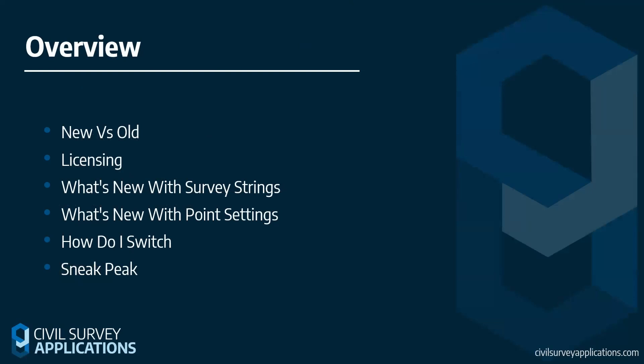A bit of housekeeping for today — a quick overview. We're going to do a rundown of old versus new software packages. I'll briefly touch on the new licensing added with Stringer V24, along with the brand new survey string settings form and point settings. We'll then go through an example showing how to bring your settings across — covering both CSV file formats and the SDB format. I'll also show a sneak peek of what's upcoming and what will be covered in a future webinar.